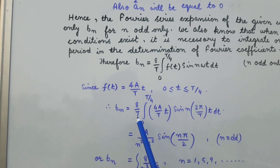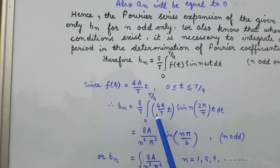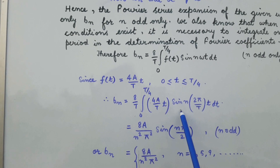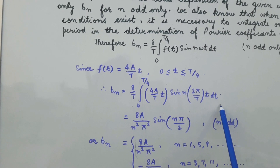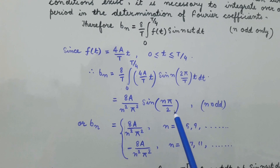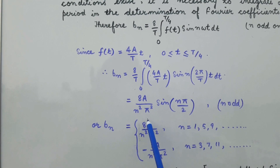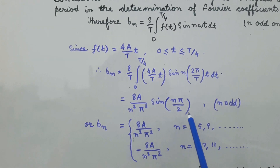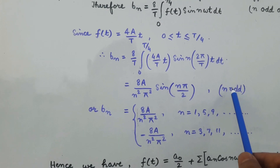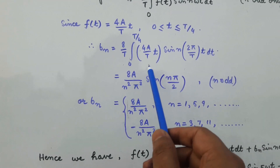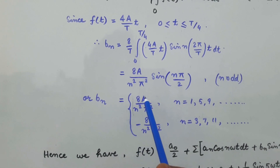On substituting the value of f(t) in the equation for b_n, we find that b_n = (8/T) × integral from 0 to T/4 of (4a/T) × t × sin(n × 2π/T × t) dt. This comes out to be 8a divided by n² π² multiplied by sin(nπ/2), for n odd.